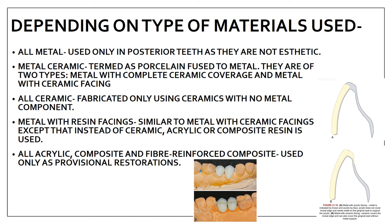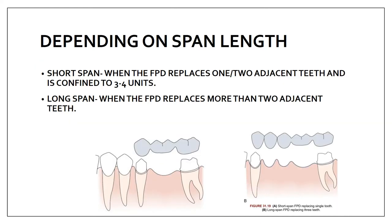The next is depending on the span length — whether it is short span or long span. When the FPD replaces one or two adjacent teeth, it is confined to three to four units — this is a short span. In long span, the FPD replaces more than two adjacent teeth; there are five units, so this is a long span edentulous arch.